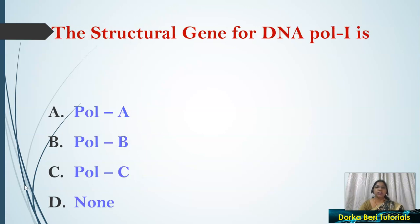Next question: The structural gene for DNA Pol 1 is — options: pol A gene, pol B gene, pol C gene, or none. The answer is pol A gene, which encodes DNA Polymerase 1.